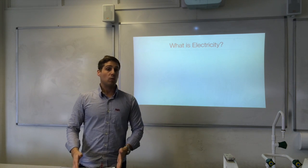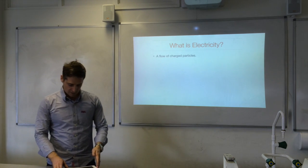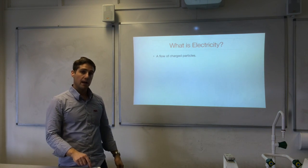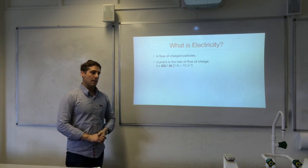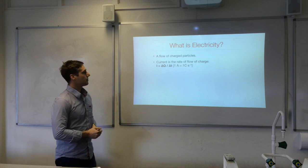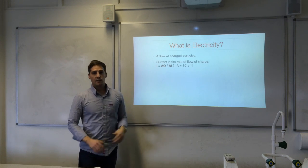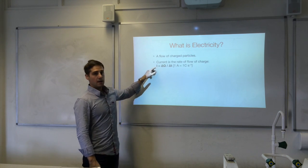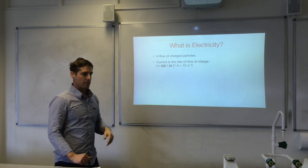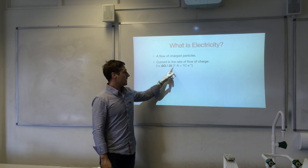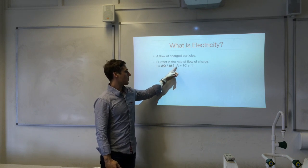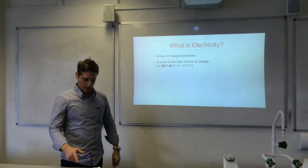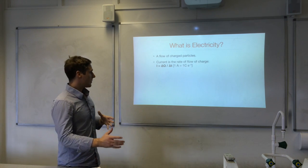Let's think about what electricity is. It's a flow of charged particles, like electrons — that would be the most common example of electricity. Current is the rate of flow of charge; that's how we define what a current is. I equals delta Q over delta T. The units for current are amperes, amps. One amp is equal to one coulomb per second — that's how the units match up.